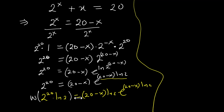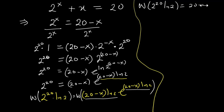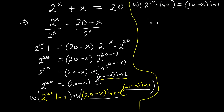We can now go ahead and take the Lambert W function on both sides. Taking W of 2^20·ln 2 on the left, and applying the Lambert W function to the right-hand side cancels the W and the exponent structure, leaving us with (20 minus X)·ln 2.